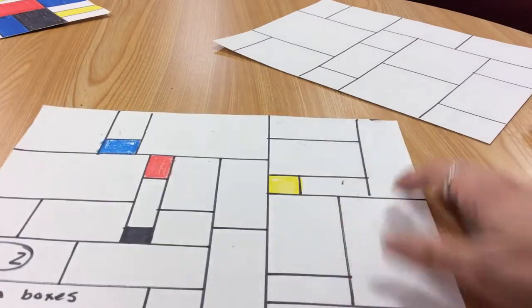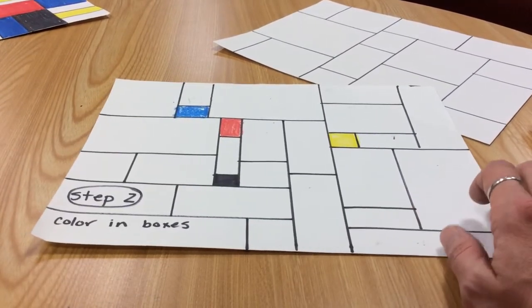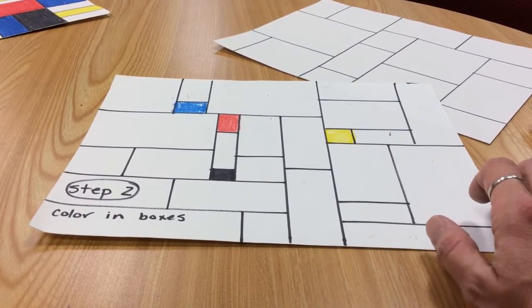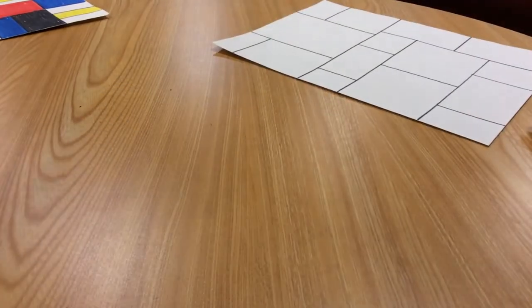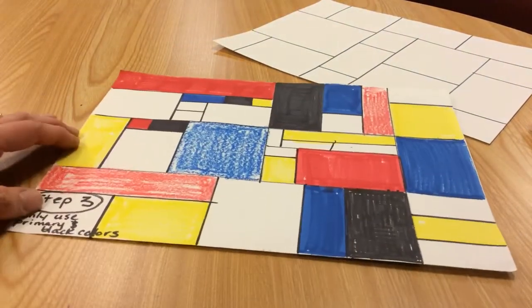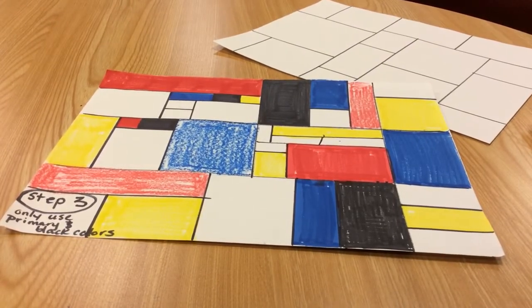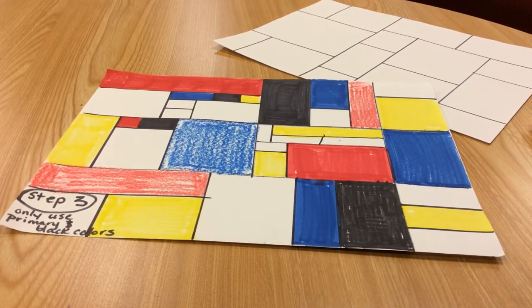You would slowly color in each box using one of the primary colors or the black Sharpie. And of course, be sure to color in the boxes nice and neatly, staying in the lines and filling the shape in all the way so you don't see any white space.